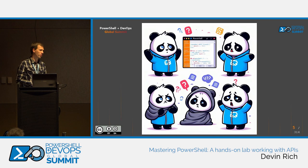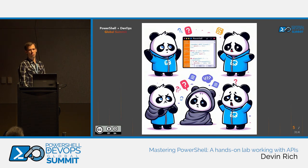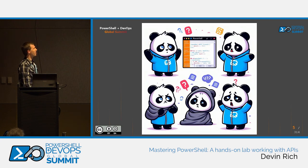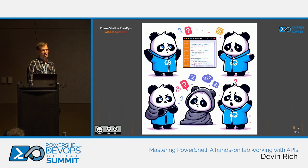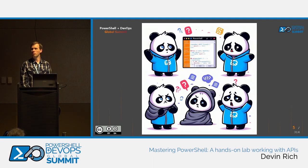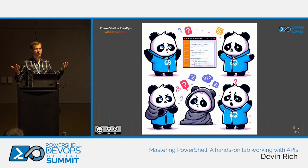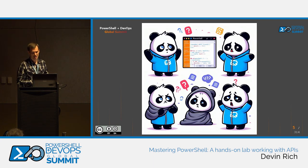I asked Copilot what it thought of using Windows PowerShell to work with web cmdlets and APIs, and it spit out some sad pandas. Either way, Copilot says don't use Windows PowerShell if you're working with APIs — use PowerShell Core.